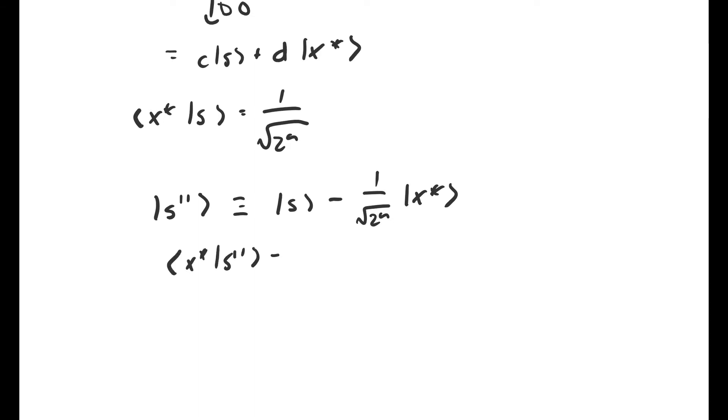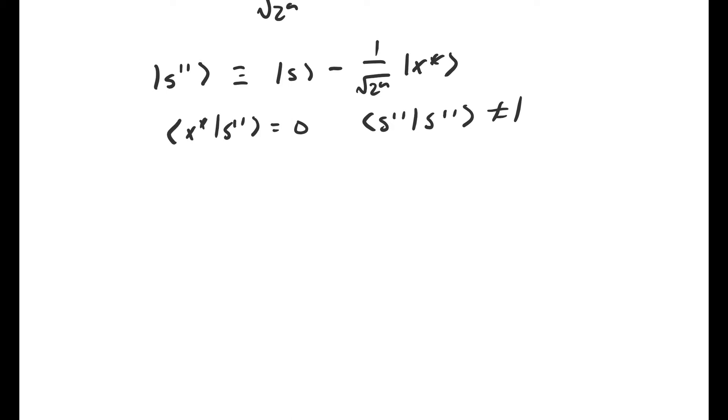However, s double prime isn't normalized. Its inner product with itself isn't equal to one. So I'm going to define another vector. It's parallel to s double prime, but it's been normalized.